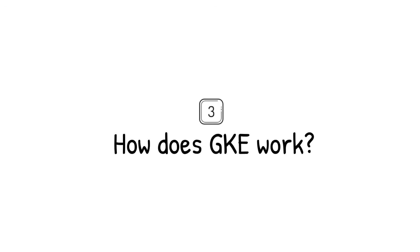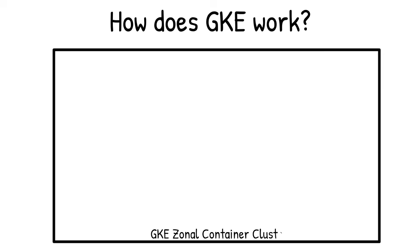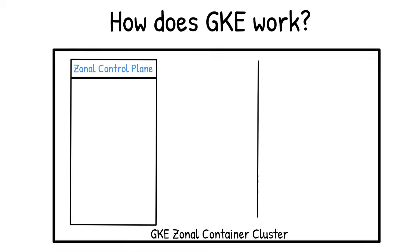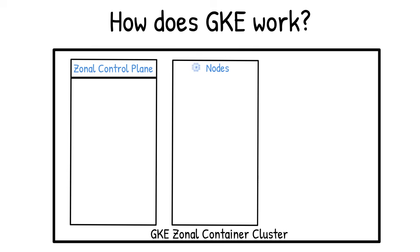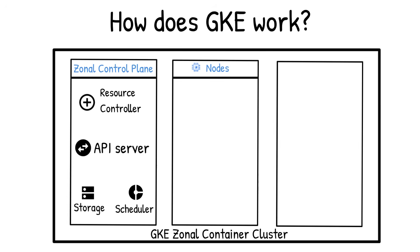How does GKE work? All Kubernetes objects in your containerized app run on top of a cluster, which is the foundation of GKE. A cluster consists of at least one control plane and one or more machines called nodes, which are created during the cluster creation process. The control plane includes the Kubernetes API server, scheduler, storage, and core resource controllers.